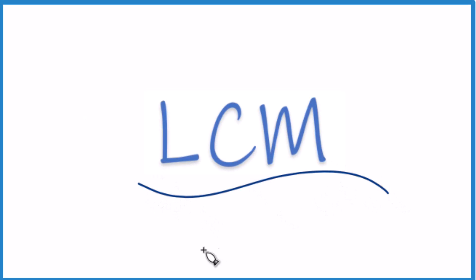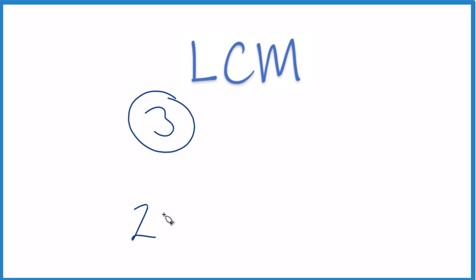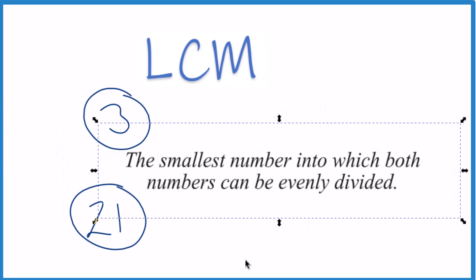Let's take a look at the LCM, the least common multiple for 3 and for 21. You can think about the LCM as the smallest number that both of these numbers can be divided into.